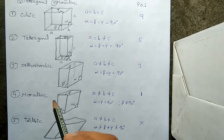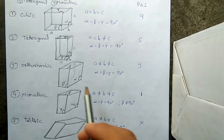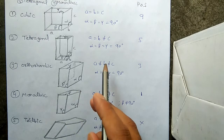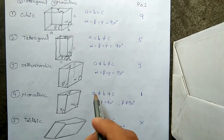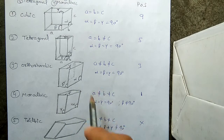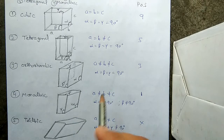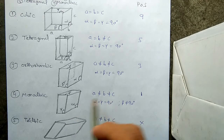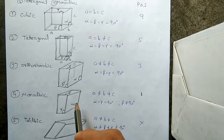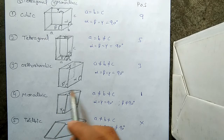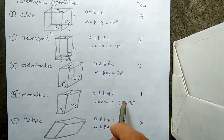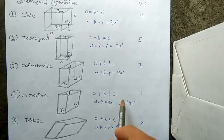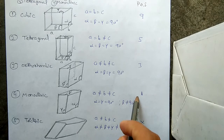The fourth one is Monoclinic. In this system, all the sides are also unequal, just like Orthorhombic. However, alpha and gamma are equal to 90 degrees, while beta is not equal to 90 degrees — it may be greater or less than 90 degrees. This system has one plane of symmetry.